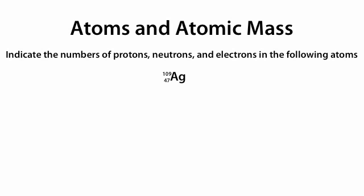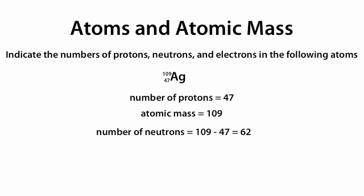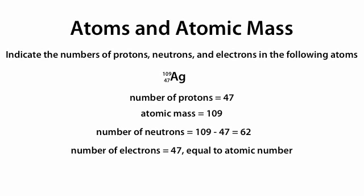The same applies for Ag with 109 on top and 47 on the bottom. The number of protons equals 47, because that's the atomic number given on the bottom left. The atomic mass equals 109, given on the top left. The number of neutrons equals the atomic mass minus the atomic number: 109 minus 47 equals 62. The number of electrons equals 47, because that equals the atomic number, or the number of protons.